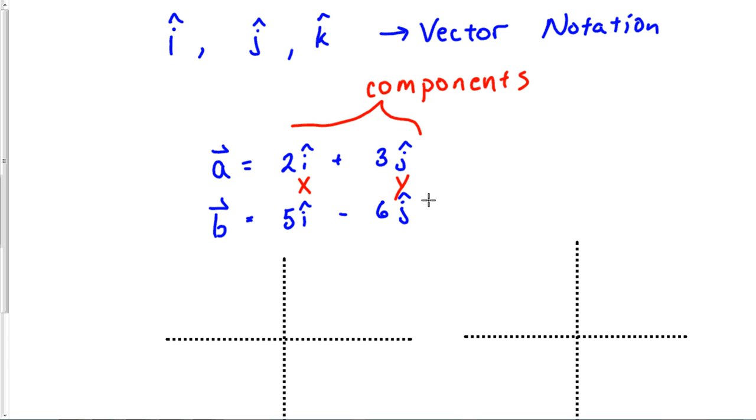When you see this notation, vector a is 2 in the x. So vector a's x component is 2 and vector a's y component is 3.